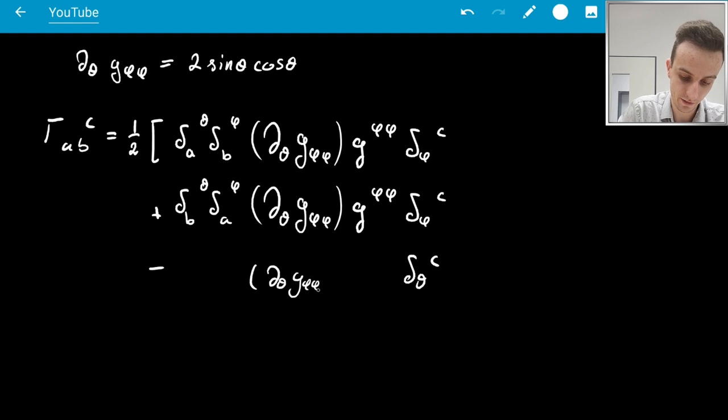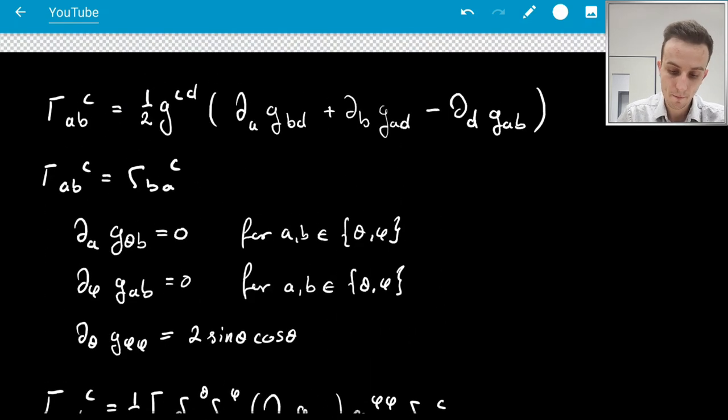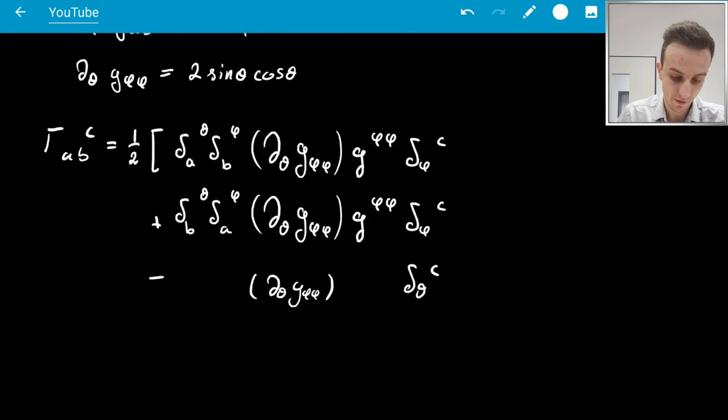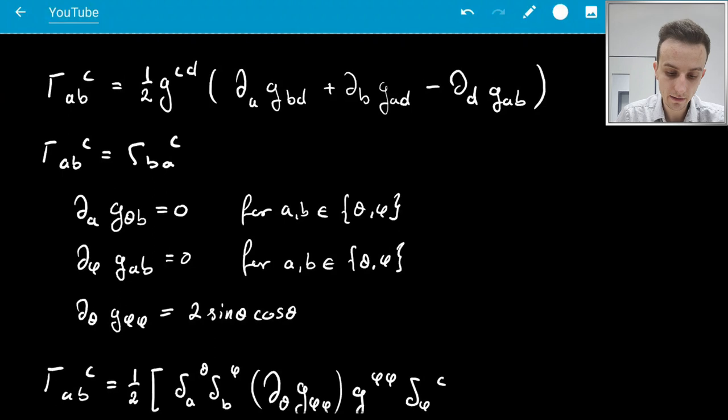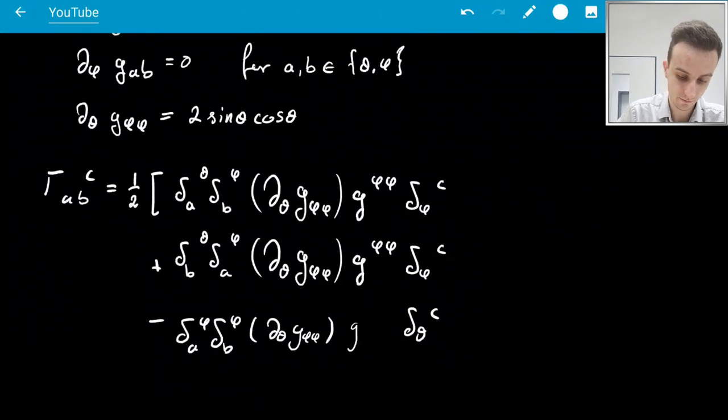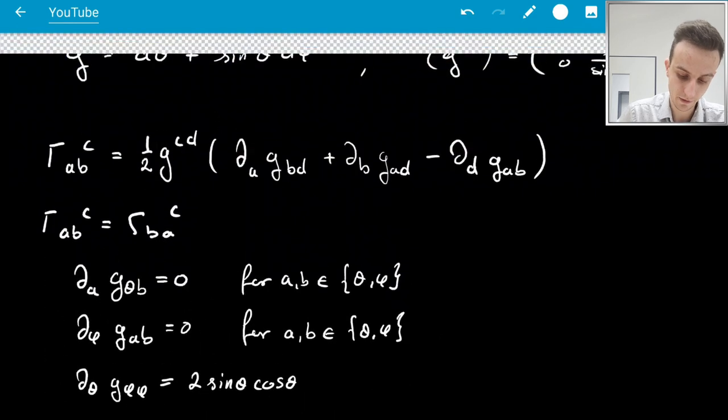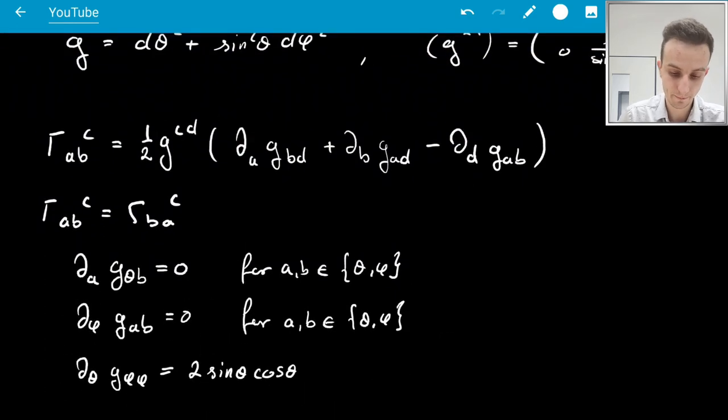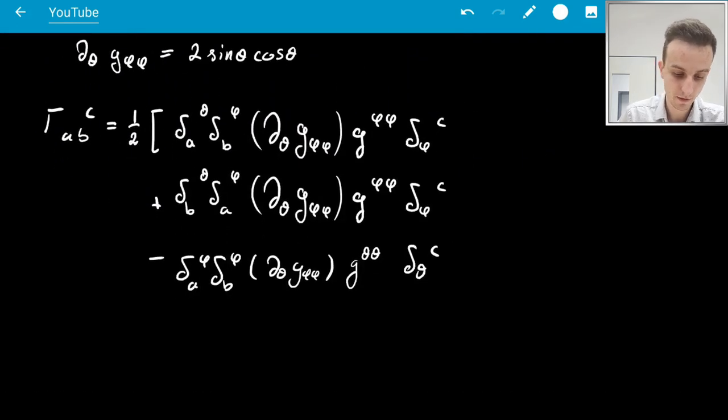Again, I'll have ∂_θ G_φφ. So now A and B are φφ, so I have δ^A_φ, δ^B_φ, and the metric in front is θθ. The inverse metric is from this D, which had to be theta.